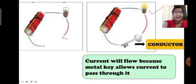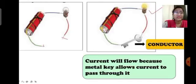In the image, we have made an electric circuit with an electric cell, bulb, and a key. After attaching the key in the circuit, the circuit is completed and the bulb is glowing. That means the key is made up of a material which conducts electricity — it allows electricity to pass through it. Therefore, the key is an example of a conductor.